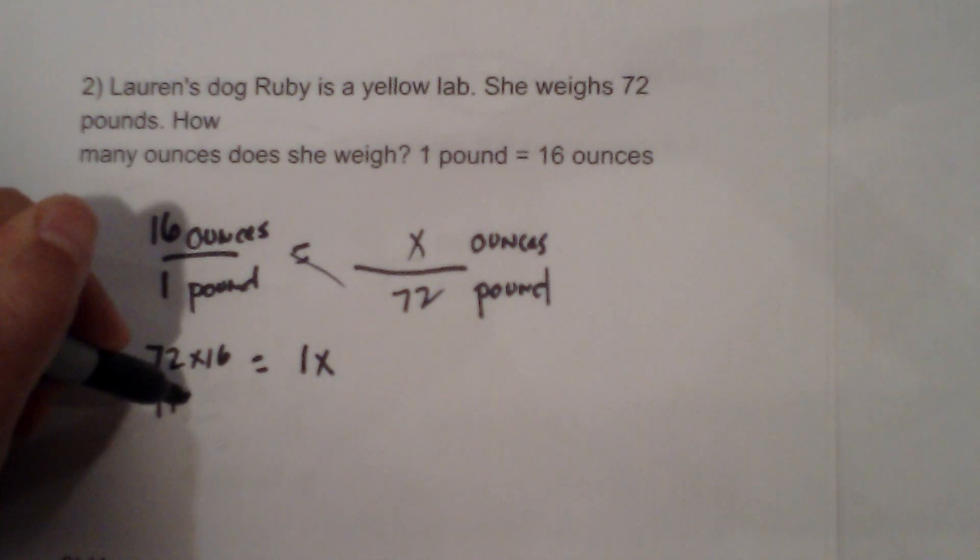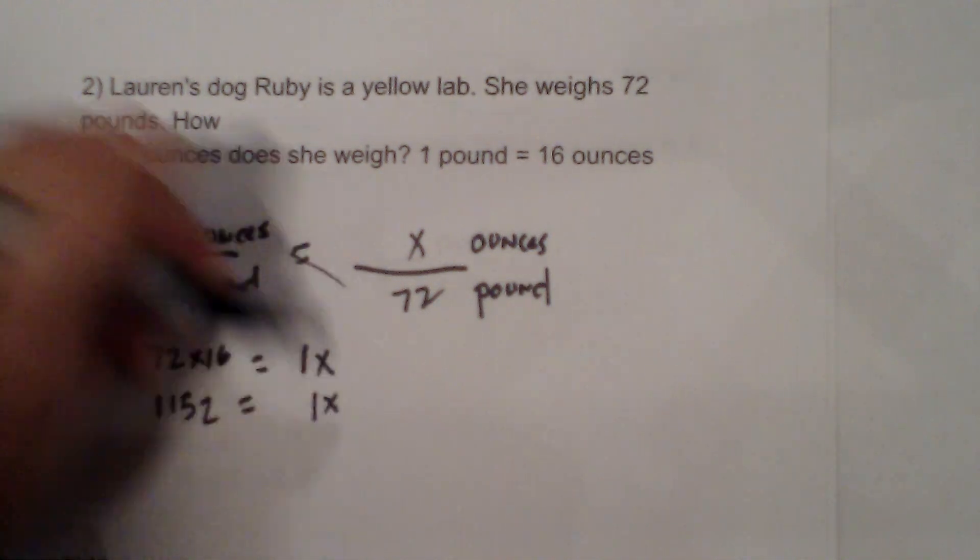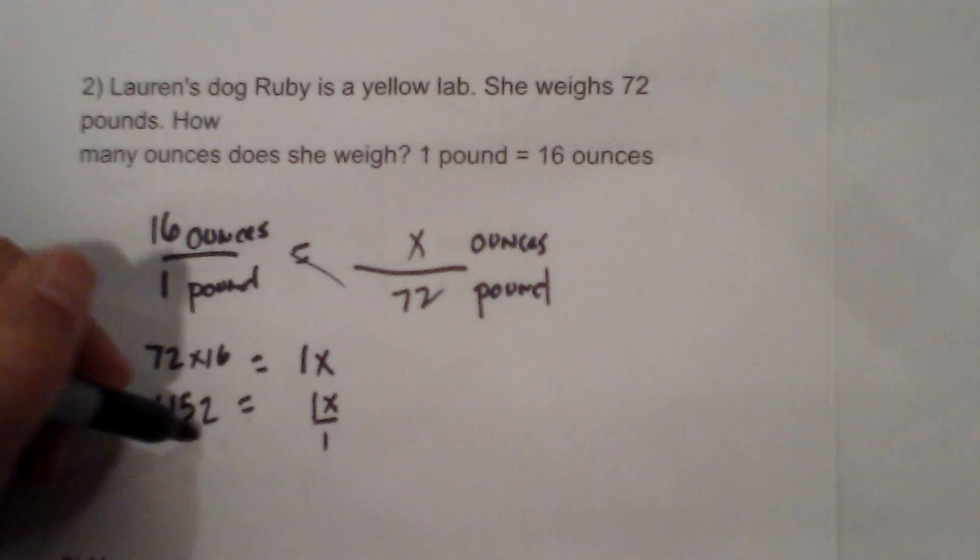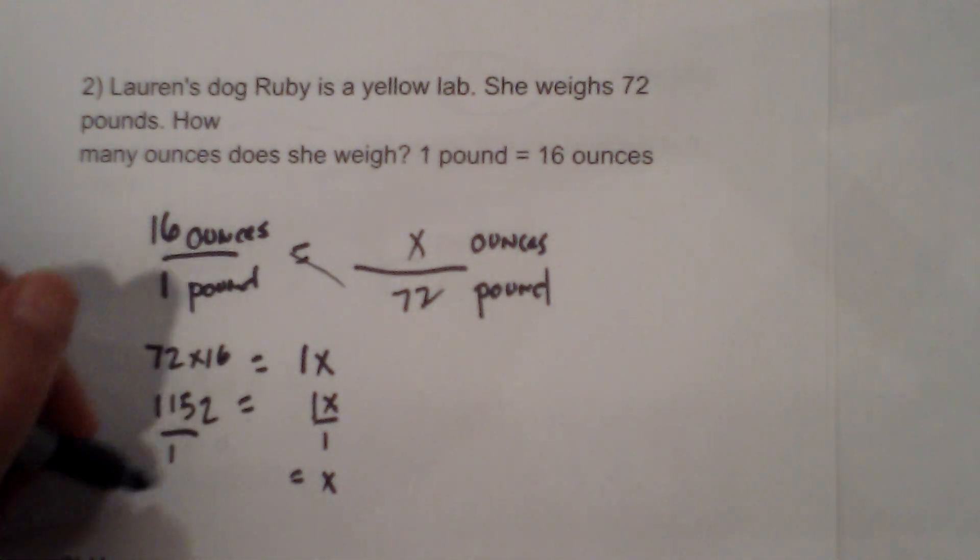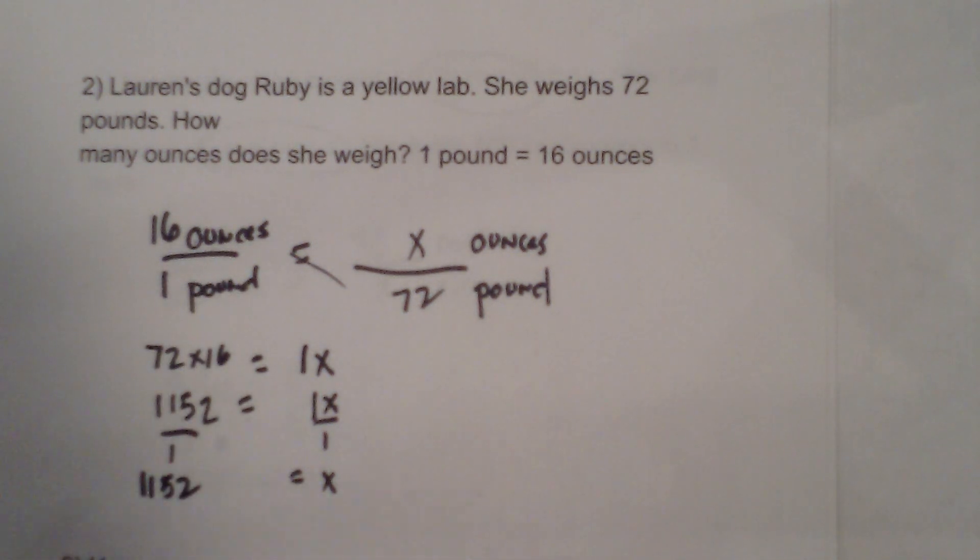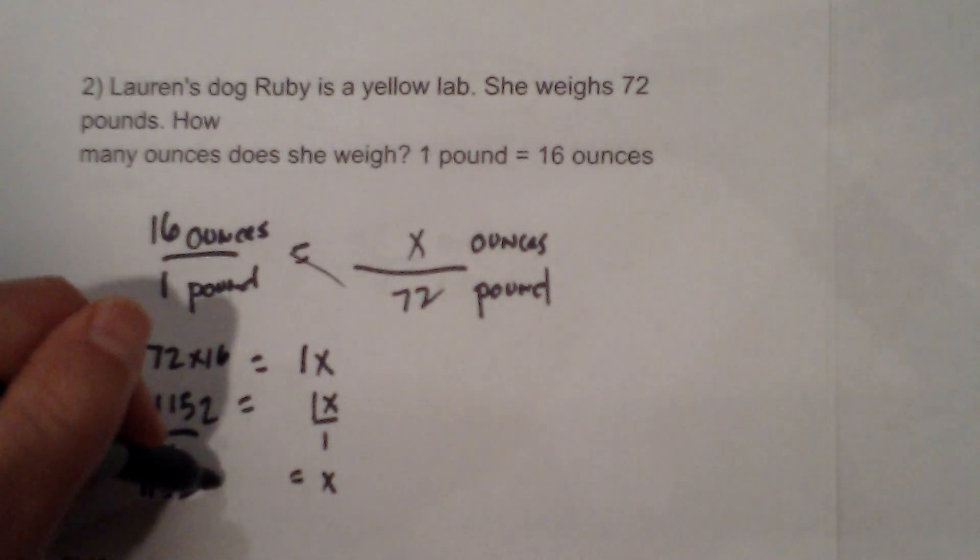1,152 is equal to 1x. And then you would divide each side by 1. So x is equal to 1,152. And what is our unit of measure? That is ounces.